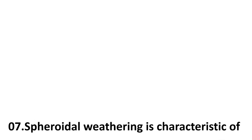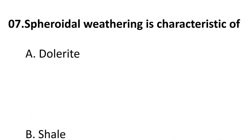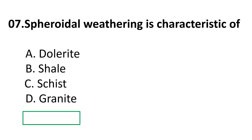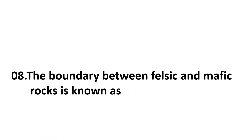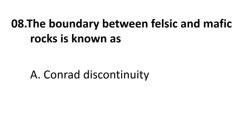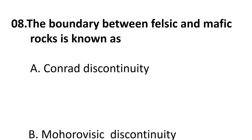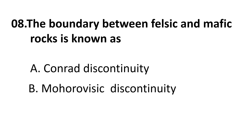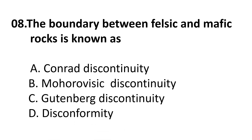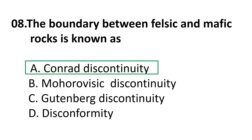Coming to the seventh question: spheroidal weathering is characteristic of — A) dolerite, B) shale, C) schist, D) granite. The correct answer is D: granite. Coming to the eighth question: the boundary between felsic and mafic rocks is known as — A) Conrad discontinuity, B) Mohorovičić discontinuity, C) Gutenberg discontinuity, D) none. The correct answer is A: Conrad discontinuity.